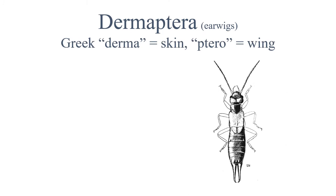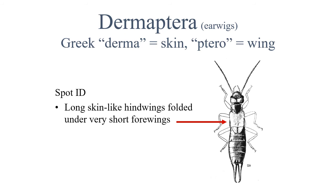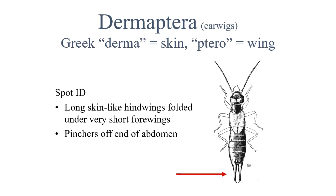The Dermaptera are earwigs. They have long, skin-like hind wings folded underneath very short forewings, which gives them their Greek name meaning skin-wing. Perhaps most recognizably, they have pinchers at the end of their abdomen.